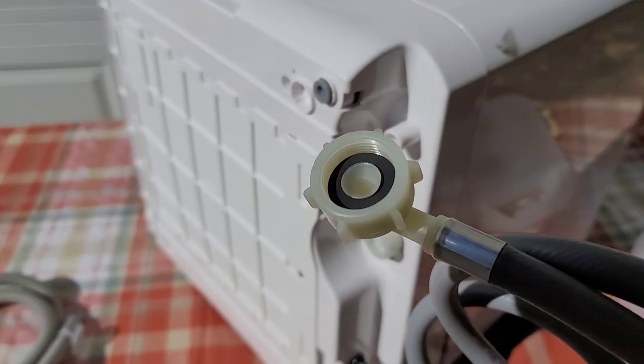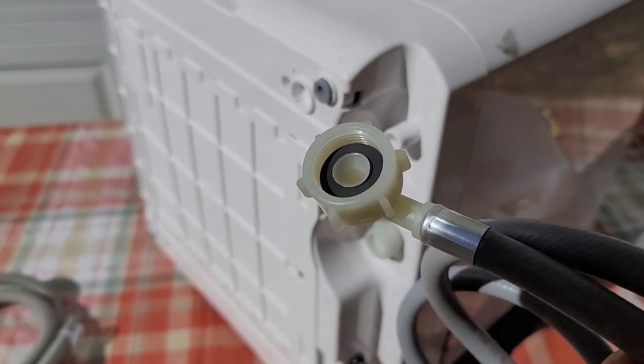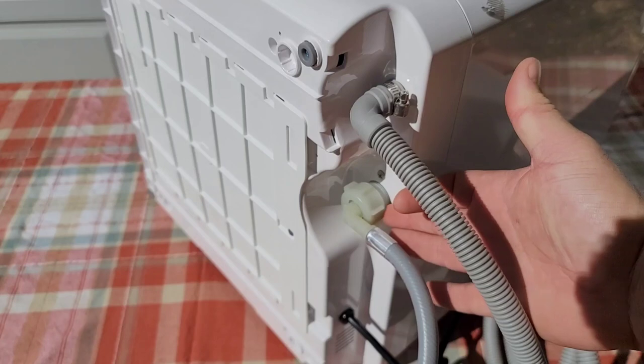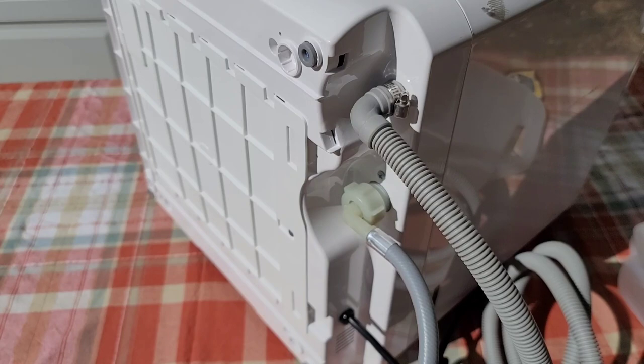I'm glad they included a washer, but just know this is a wearable part. So over time it may leak, so just keep an eye on it. Both our drain line and water line are hooked up. I actually have the water on because this is a good time to test to see if there's a leak. It does not look like it's leaking.